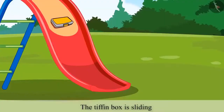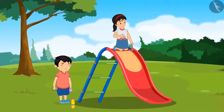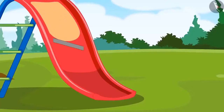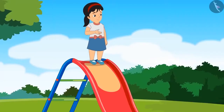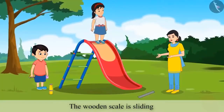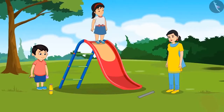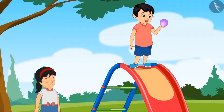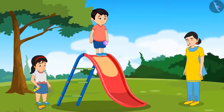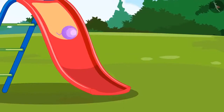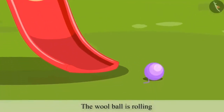Mommy, let me just try pushing this wooden scale. Look Mommy, it slid down, isn't it? Yes Pinky, this wooden scale slid down. Mommy, may I try and push this ball of wool? Yes Chotu, why don't you try? Mommy, this ball of wool rolled and came down. Rightly said Chotu. So Mommy, this means that all round objects roll and the rest of the objects slide down — is it so?